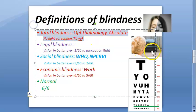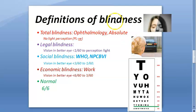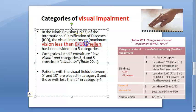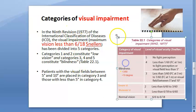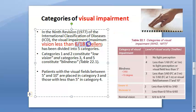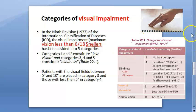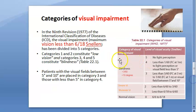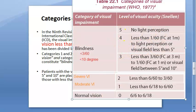Now, if blindness is defined as above, what is visual impairment? If visual acuity is less than 6 by 18 on Snellen's chart, it is called visual impairment. Note that nowadays the LogMAR chart is preferred over the Snellen's chart clinically, but Snellen's is still used in the definitions, so we go with that.